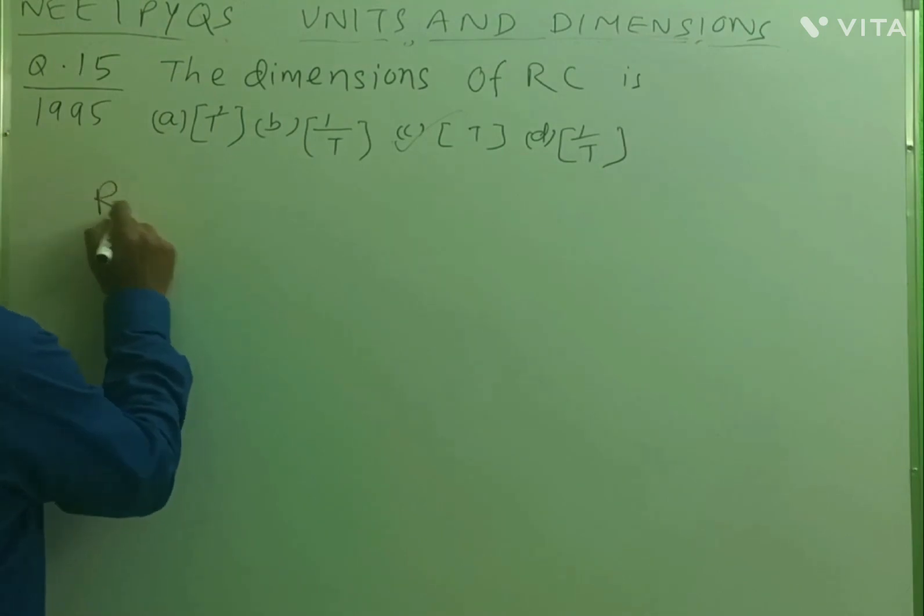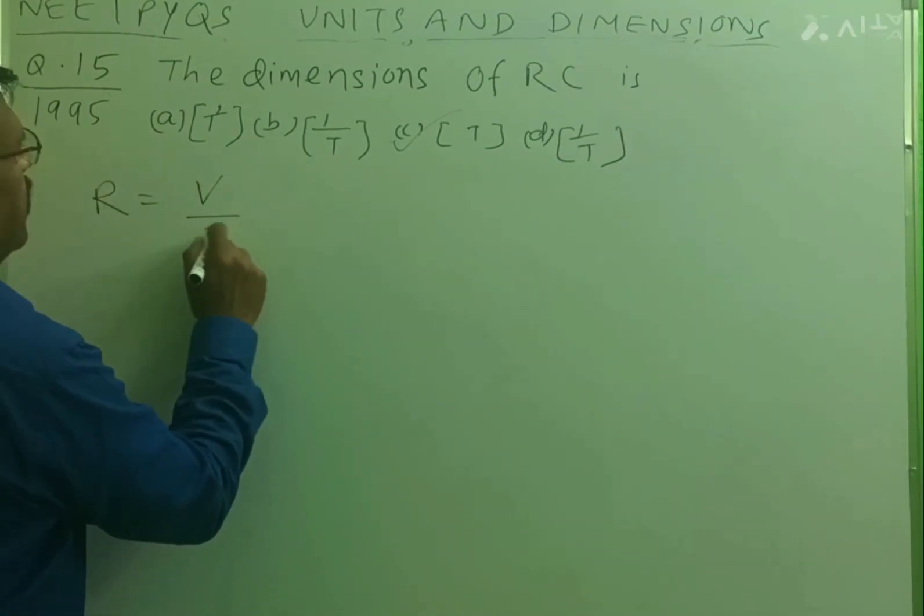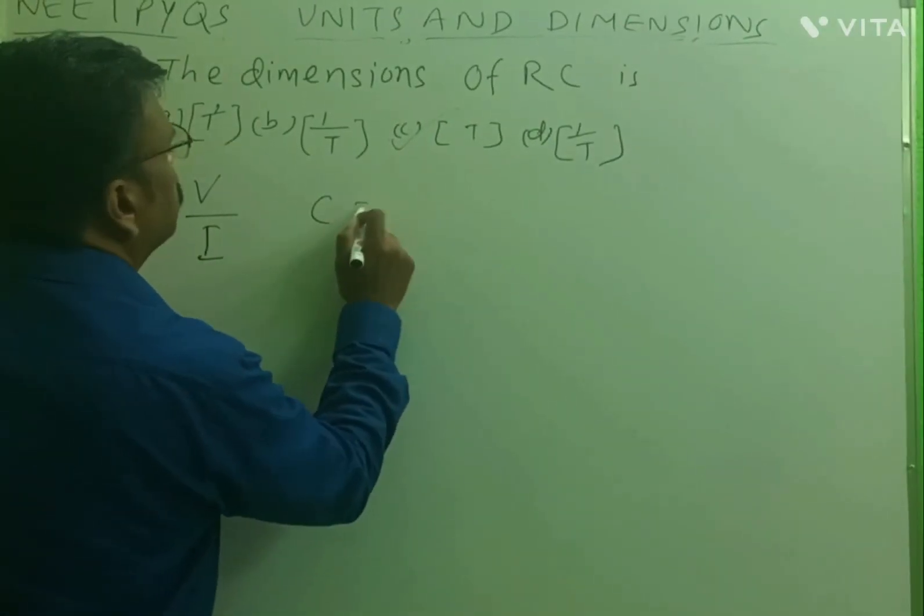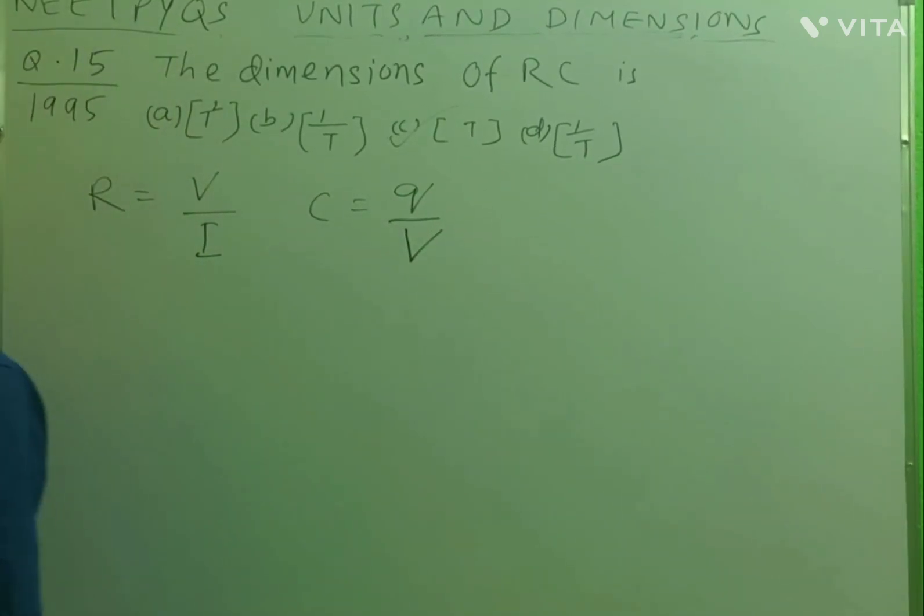What is the formula of resistance? From Ohm's law, we know R is equal to V by I. And what is capacitance? We know the formula C is equal to Q by V.